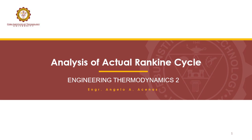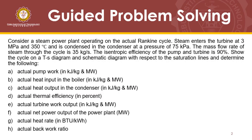Welcome to this lecture on the analysis of the actual Rankine Cycle. Consider a steam power plant operating on the actual Rankine Cycle. Steam enters the turbine at 3 MPa and 350 degrees Celsius and is condensed in the condenser at a pressure of 75 kPa. The mass flow rate of the steam through the cycle is 35 kg per second. The isentropic efficiency of the pump and the turbine is 90%. Show the cycle on a TS diagram and schematic diagram with respect to the saturation lines and determine the following.